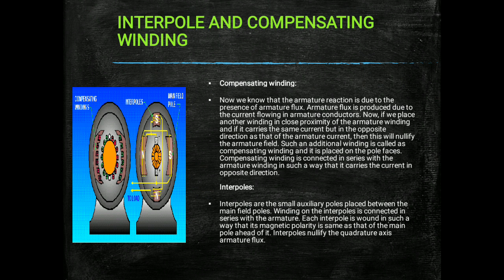The compensating winding is connected in series with the armature winding so that it carries current in the opposite direction. Now, what are interpoles? You can see the image of interpoles and compensating winding here. Interpoles are small auxiliary poles placed between the main field poles. The winding on the interpoles is connected in series with the armature. Each interpole is wound so that its magnetic polarity is the same as that of the main pole ahead of it. Interpoles nullify the quadrature-axis armature flux, thereby minimizing armature reaction, as does the compensating winding.